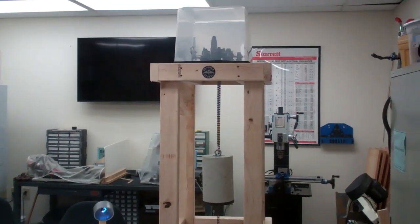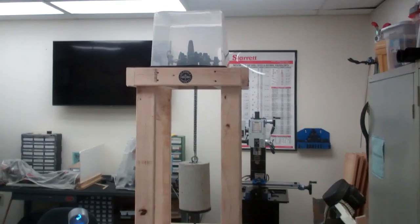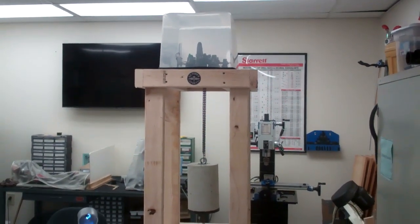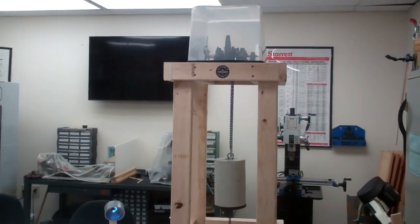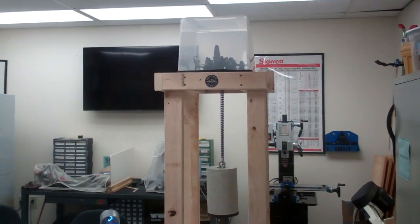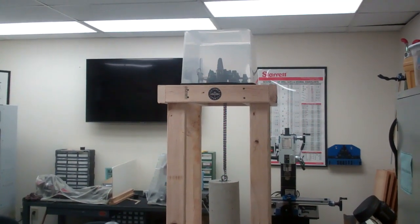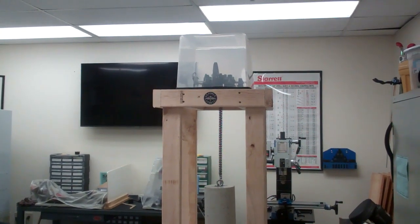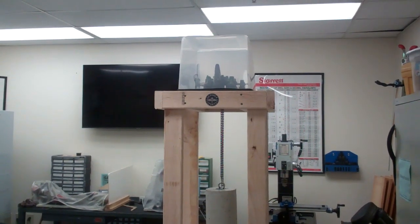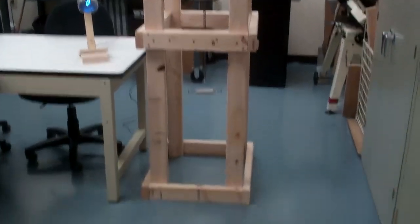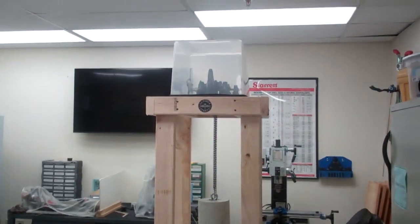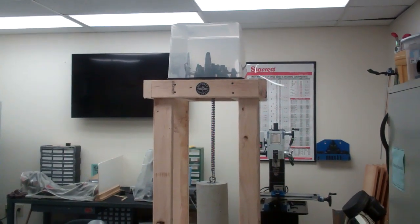So there were three students who worked on this project. They had 72 hours over a period of 12 weeks. And their two initial decisions were, number one, to use a chain drive mechanism. And also they decided on a structure that was floor mounted. The other option would be to have the mechanism hanging from the ceiling.